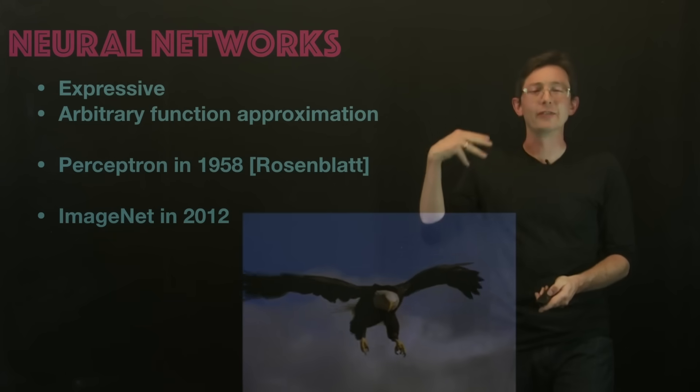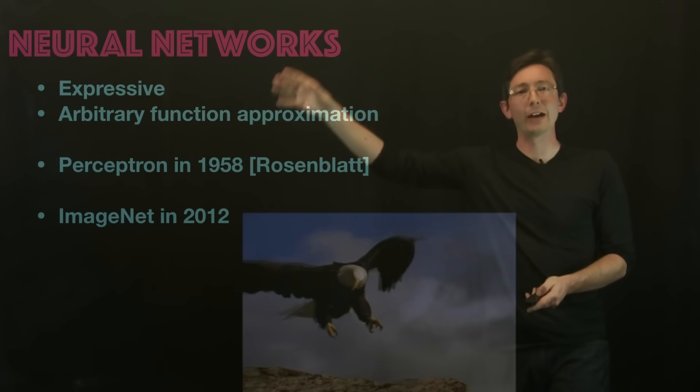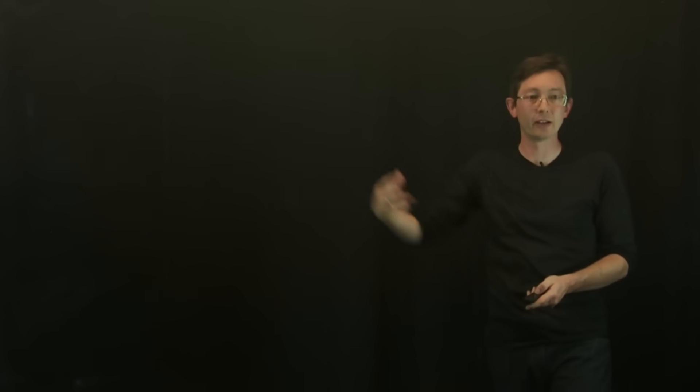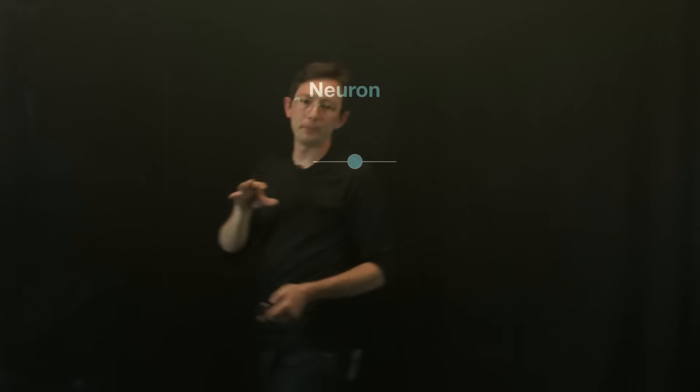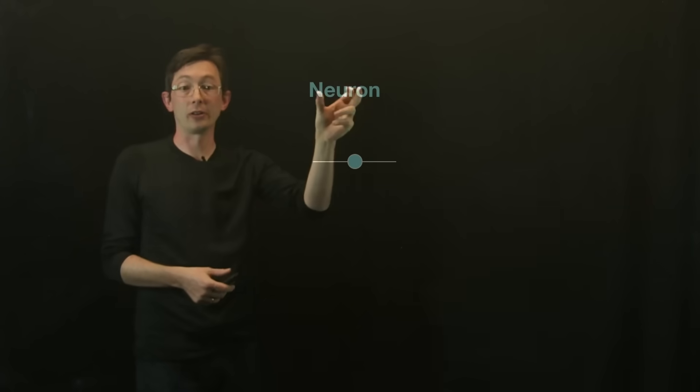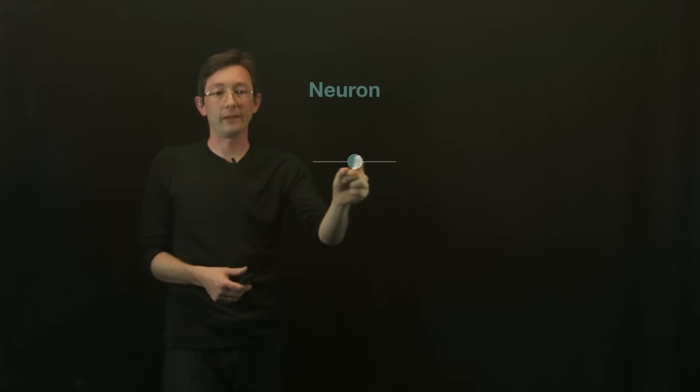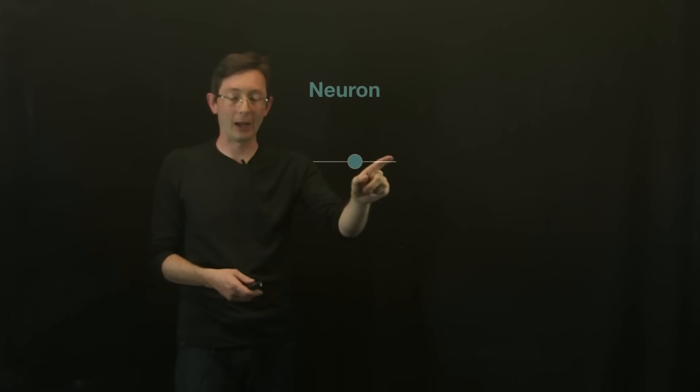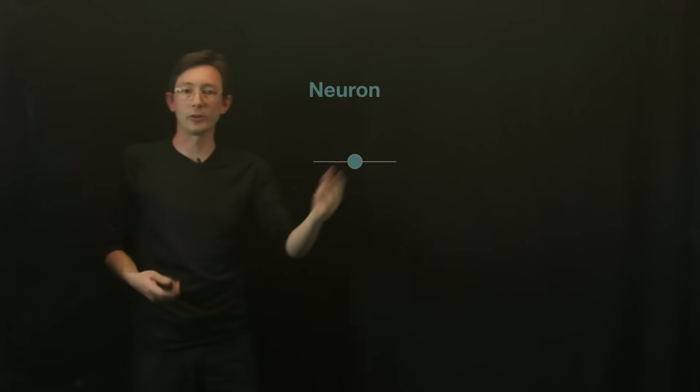Now I want to walk through a little bit of the architecture and how you build neural networks, what they're made of. The basic building block of a neural network is a neuron, which is this little functional unit, an input-output node or neuron.